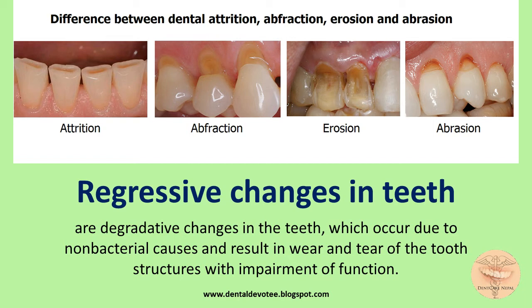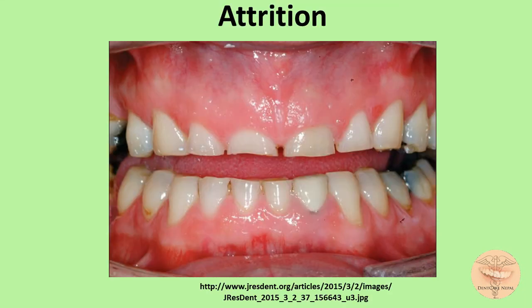Let's see some of the commonest regressive alterations of teeth one by one. Firstly, attrition. Attrition is a form of regressive change in teeth characterized by wear of tooth substance or restoration as a result of tooth-to-tooth contact during occlusion, mastication, or parafunction.